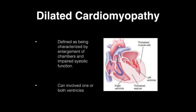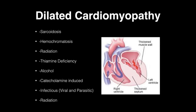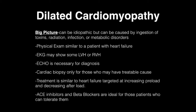The causes of dilated cardiomyopathy include a large laundry list. For the exam, focus on recognizing them rather than having them memorized. Causes include genetic factors, thyrotoxicosis, starvation, peri- or postpartum cardiomyopathy, cobalt ingestion, sarcoidosis, radiation, hemochromatosis, thiamine deficiency, alcohol, catecholamine-induced causes, and infectious causes such as viral or parasitic. Big picture: it can be idiopathic or caused by toxin ingestion, radiation, infection, or metabolic disorders.